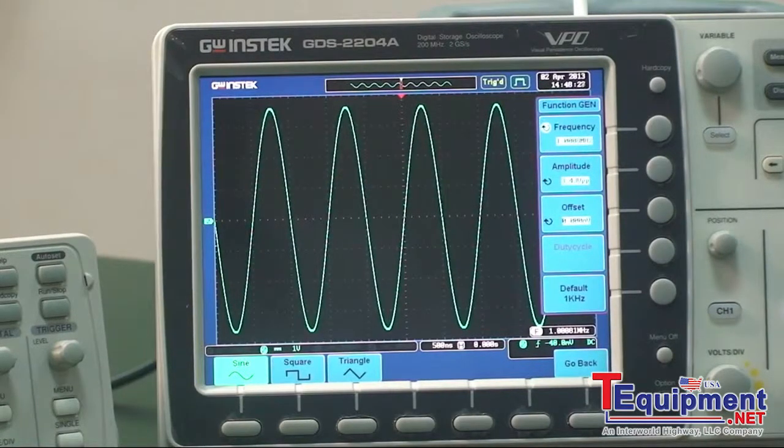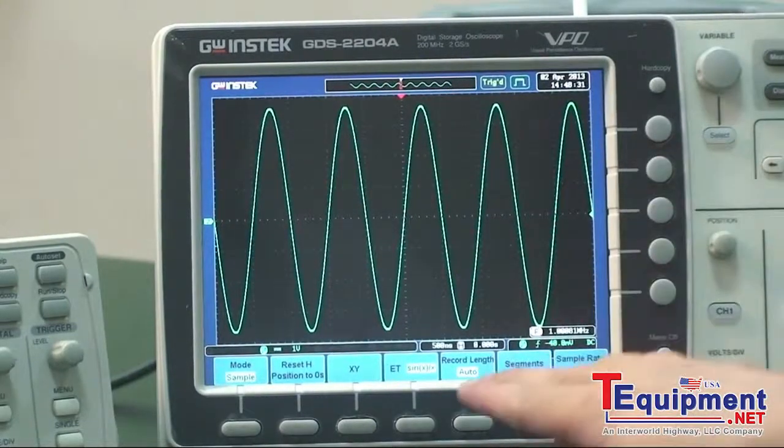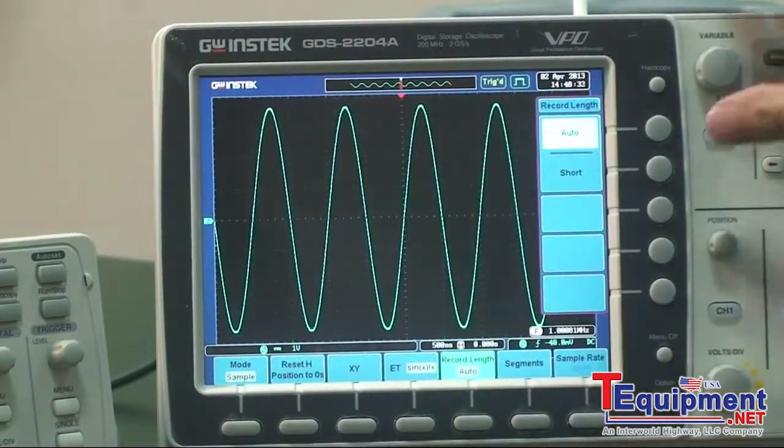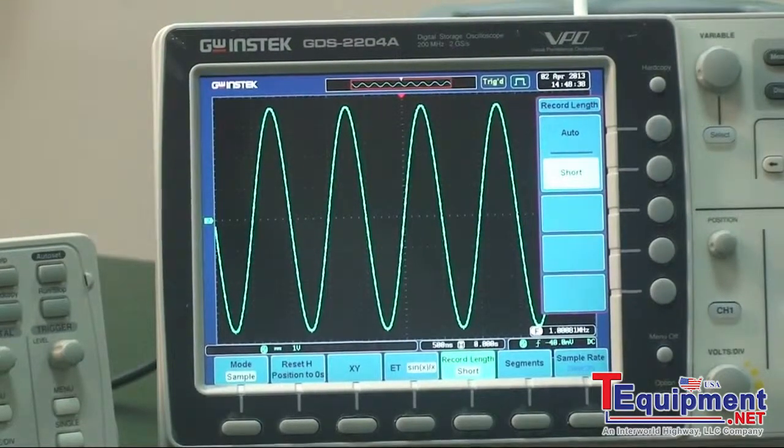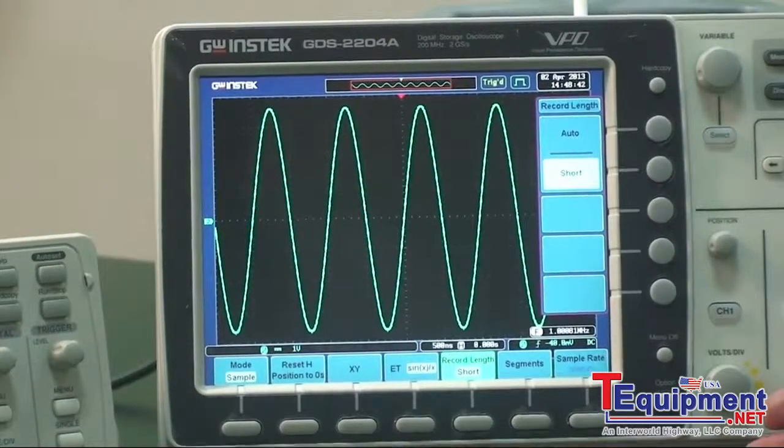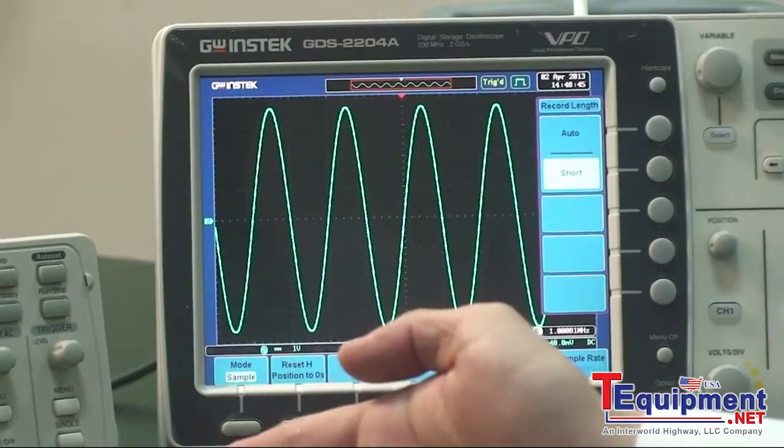Next, press acquire and select record length to short. A passive probe will be used to connect demo port 1 of GDS-2008 with GDS-1008U.